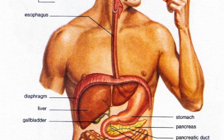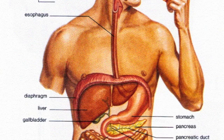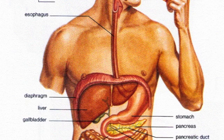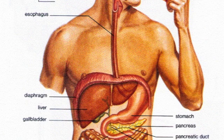Other juices, such as those from the pancreas and liver, also enter the stomach. The enzyme amylase is contained in pancreatic juice, which breaks down complex sugars called polysaccharides into simple sugars like glucose.